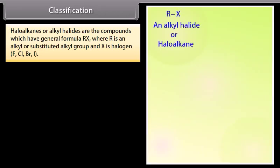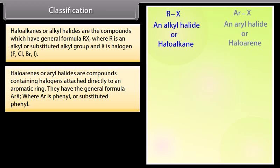Classification. Haloalkanes or alkyl halides are the compounds which have the general formula RX where R is an alkyl or substituted alkyl group and X is the halogen F, Cl, Br, or I. Haloarenes or aryl halides are compounds containing halogens attached directly to an aromatic ring. They have the general formula ArX where Ar is phenyl or substituted phenyl.